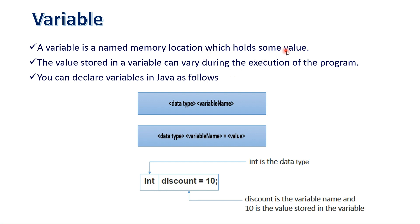The purpose of using a variable in programming is to store some value or data. The syntax to declare a variable in Java is: data type followed by variable name, then a semicolon. You can also initialize the variable while declaring it: data type, variable name, equals, initialization value. For example, the int is the data type, discount is the name of the variable, and 10 is the assigned value.